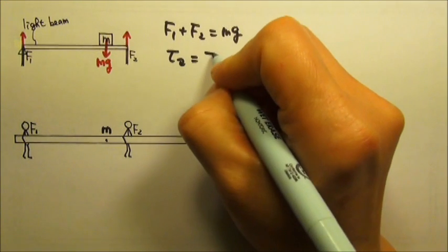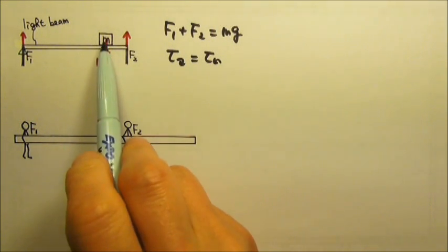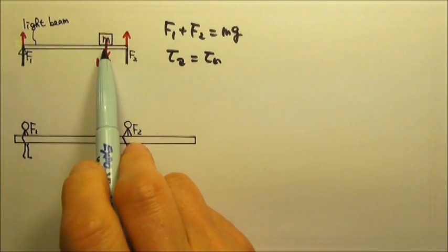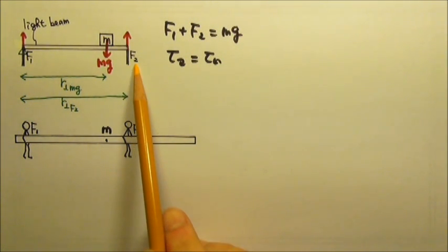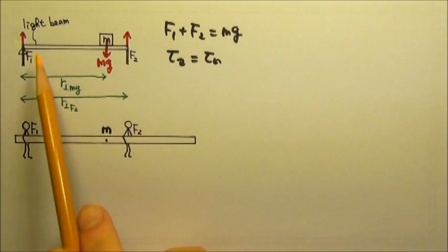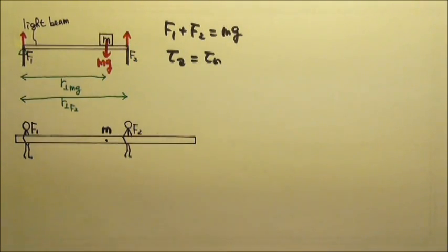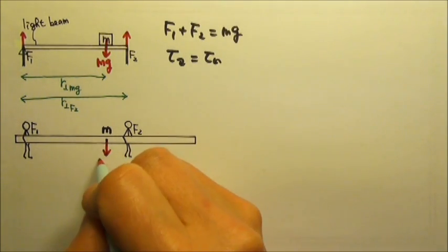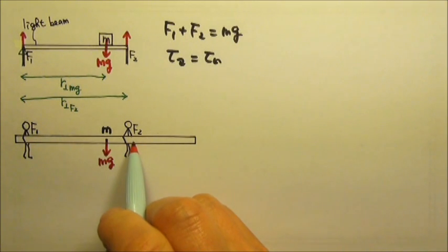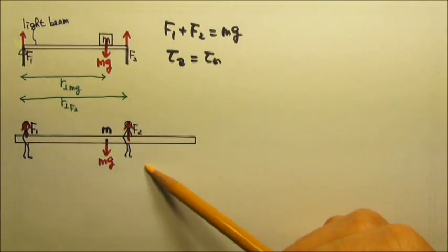We can write clockwise torque equals counterclockwise torque. In this case, the clockwise torque is produced by Mg, so we multiply Mg by the lever arm — that is the distance between the line of force and the axis. The counterclockwise torque is produced by F2, and the distance between the line of force and the axis is its lever arm. So Mg times its lever arm equals F2 times its lever arm. This scenario, even though it doesn't look exactly the same, has the same forces: Mg at the center of mass and F1 and F2 upward.